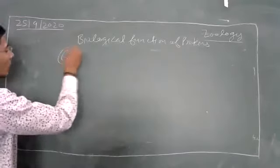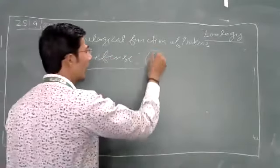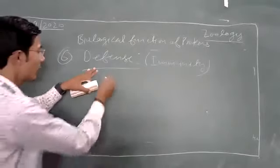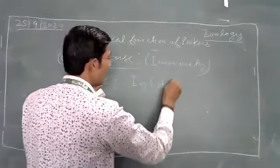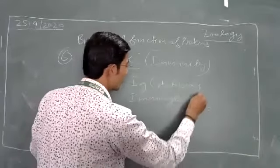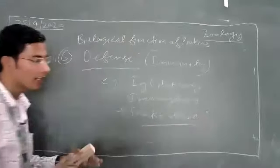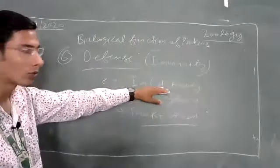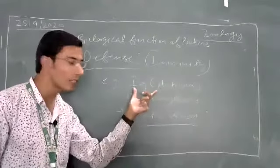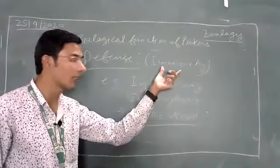The sixth function is defense — immunity. Proteins also provide immunity. For example, immunoglobulins are antibodies. Antibodies, like those produced against snake venom, are proteins — specifically glycoproteins. The different immunoglobulin (Ig) types provide immunity in your body. Proteins help as immunity boosters.